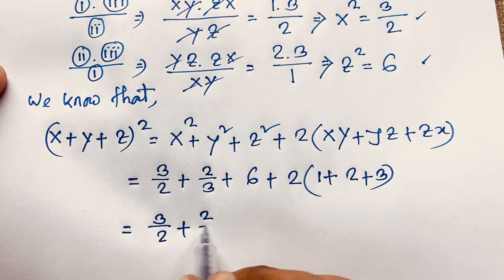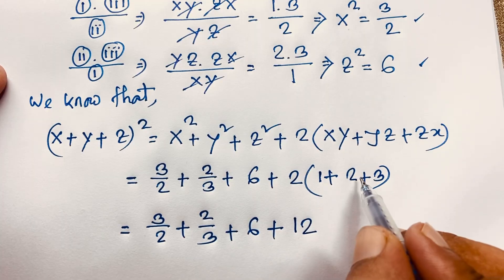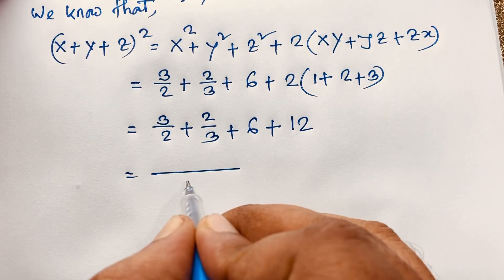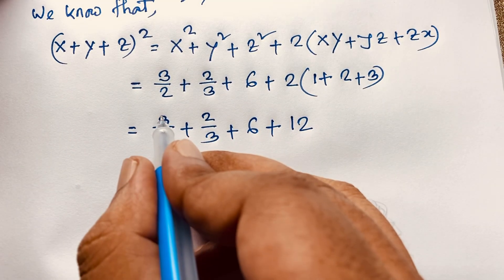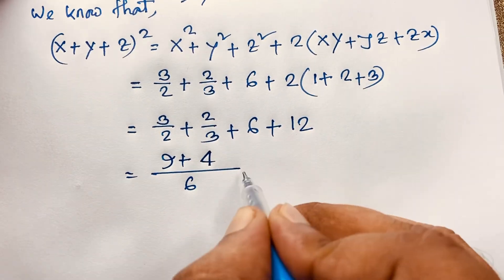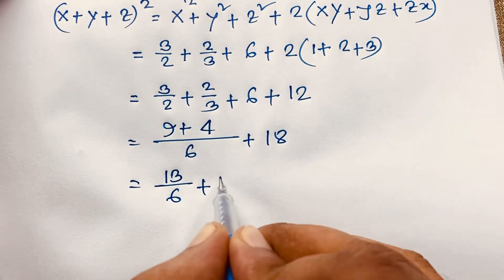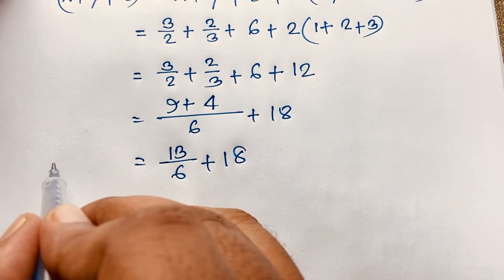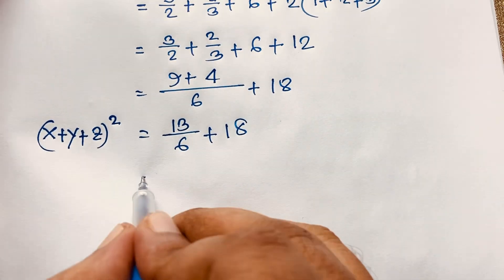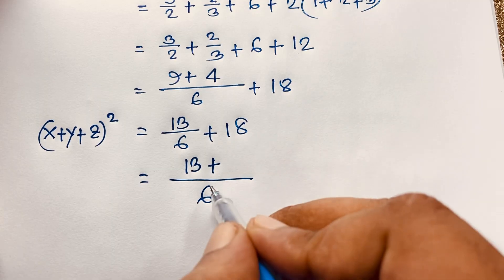So (x+y+z)² = 3/2 + 2/3 + 6 + 12. Using LCM of 6: (3/2 = 9/6) + (2/3 = 4/6) + 18/6 + 72/6. That gives 9 + 4 = 13 over 6, plus 18, so (x+y+z)² = 13/6 + 108/6 = 121/6.